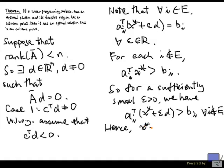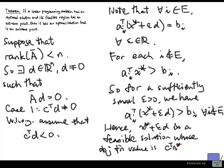Hence, x-star plus epsilon d is a feasible solution whose objective function value is c transpose x-star plus epsilon c transpose d. But epsilon is positive, and c transpose d is assumed to be negative. So this is strictly less than c transpose x-star. But c transpose x-star is the optimal value. So this is impossible. We have found a feasible solution with an objective function value less than the optimal value. So this is a contradiction. So this case is not possible.